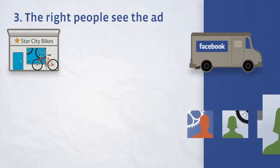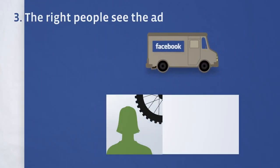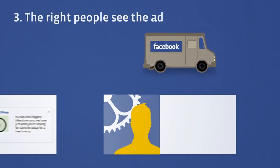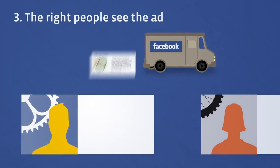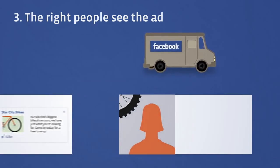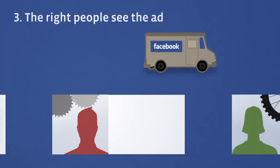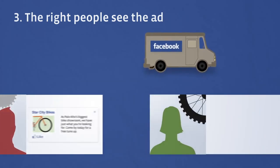Finally, the right people see the ad. Facebook shows you the ad, but only if you live in town and like to cycle. That's how advertisers reach you without knowing who you are.